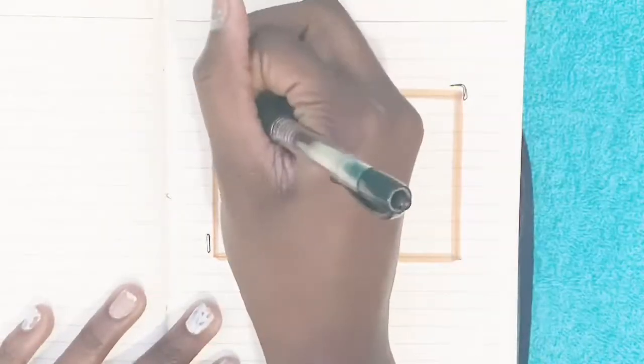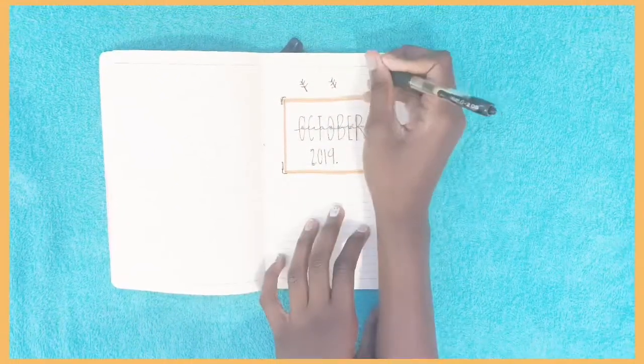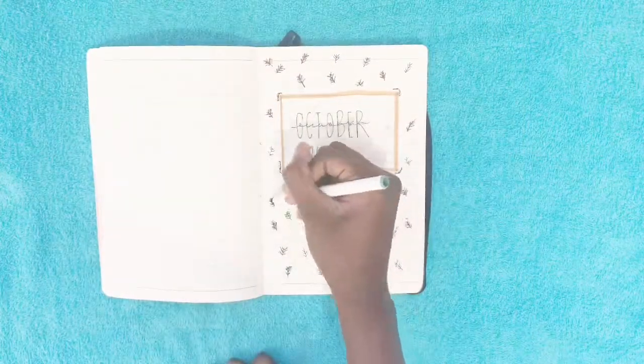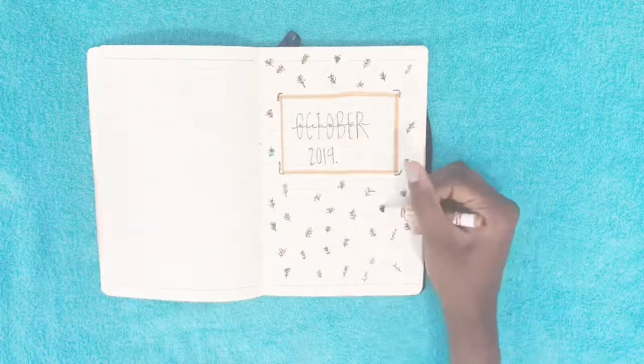First I'm starting with my front page and I just put October. I put October in the middle in cursive and then I'm just putting some leaves around the border. Then I took a brown and green Crayola marker and I went over the leaves.